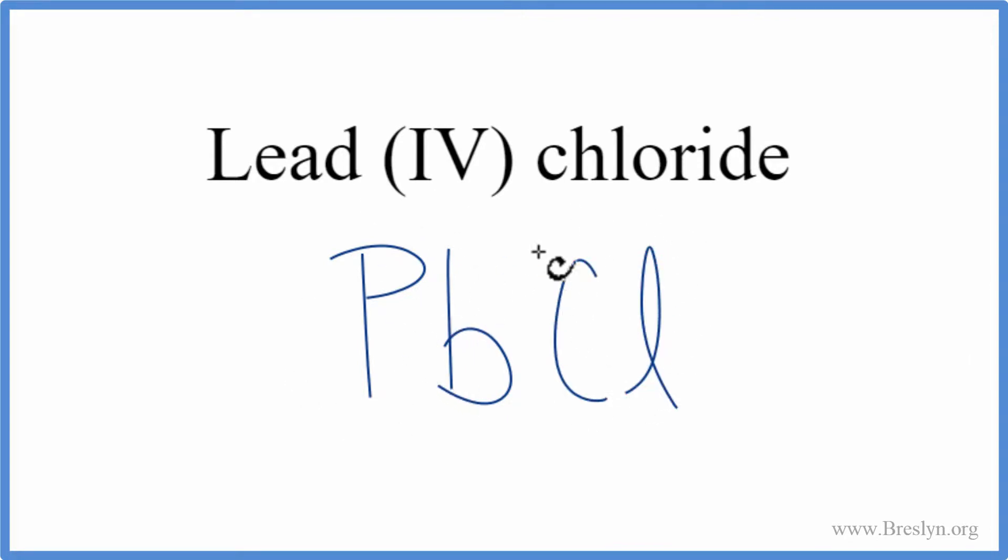Lead, that's a metal, and then chlorine's a non-metal. So we have an ionic compound, and we're going to have to look at the charges on the lead and the chlorine here.